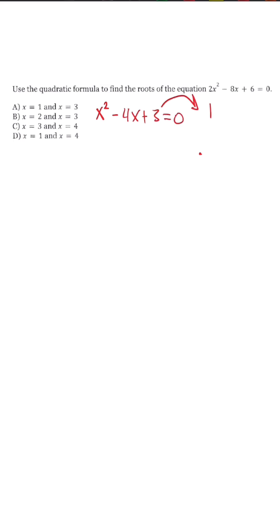We know the only factors of 3 are 1 times 3, so for us to get the correct signs, negative 4 when we add and 3 when we multiply, they both have to be negative. So our answer would be x is equal to positive 1 and x is equal to positive 3.